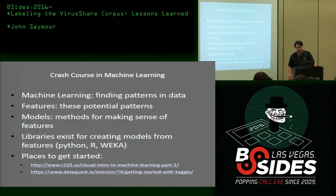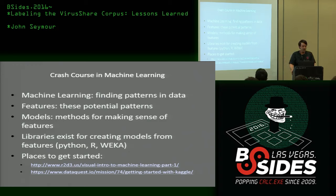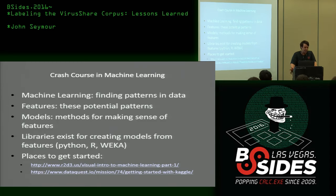What is machine learning? At a high level, it's finding patterns in data. You have all this data, you want to find patterns so you can say, hey, it's likely this thing is malicious — maybe we should check it out. Or maybe this thing is obviously standard procedure and we don't need to look at it. These patterns we look at are called features, and we use models — statistical things — to make sense of those features.